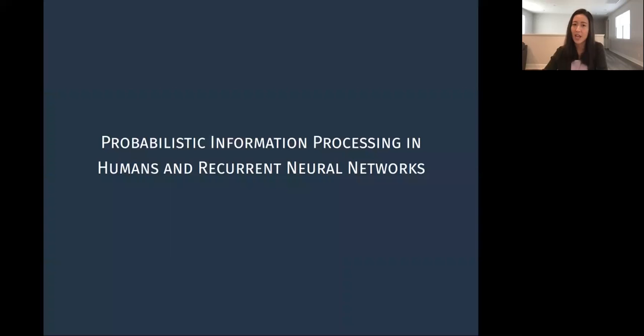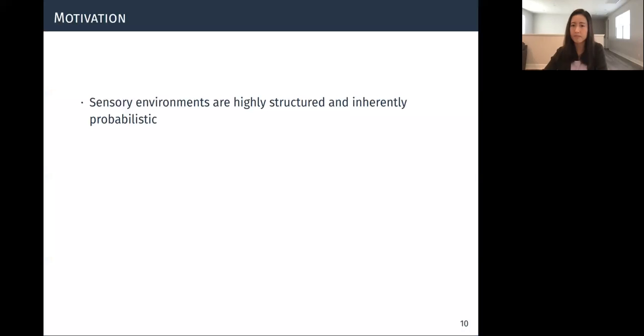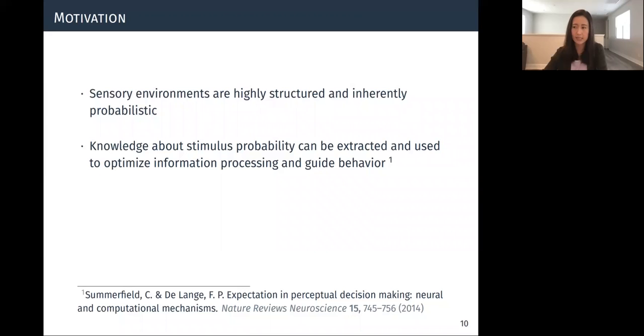So now I would like to present my current project that I have been working on with Robert Kim and Terry Zanowski, titled Probabilistic Information Processing in Humans and Recurrent Neural Networks. Naturalistic sensory environments are inherently probabilistic, and certain stimuli are subsequently encountered more frequently than others. So to optimize sensory processing, the brain needs to extract the statistics of the environment to form expectation against which incoming sensory signals are compared. And this expectation can be used to then fine tune and adapt the behavioral responses as the animals encounter novel environments.